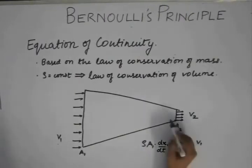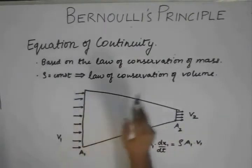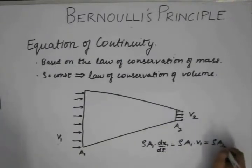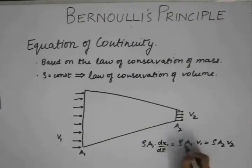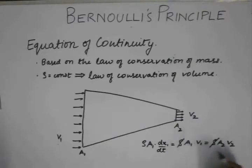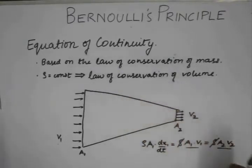According to the law of conservation of mass, this has to be equal to rho times a2 times v2. Because we assume that rho remains constant throughout, it cancels off, and we are left with the equation of continuity in terms of the law of conservation of volume.